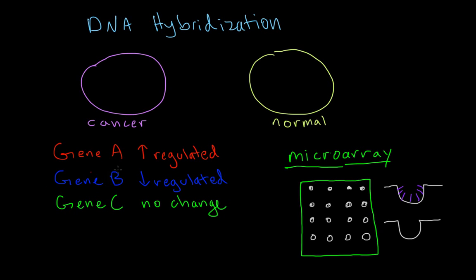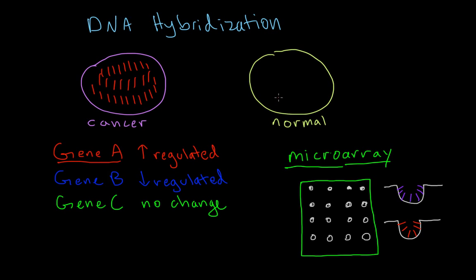Let's say that inside one of these wells we have the complementary mRNA to gene A. Now imagine that in the cancer cell gene A is upregulated — it's being over-transcribed — so there are lots and lots of gene A mRNA floating around in that cell, compared to just a few gene A mRNA in the normal cell. We can take this cell, break it apart, and label the mRNA with a fluorescent color.